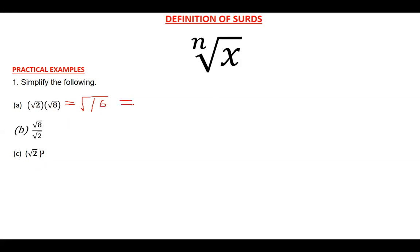I'm showing you these simple things — or reminding you of them — because they are very important for what we're going to do next, especially with indices, quadratic functions, and calculus. The square root of 16 is 4. The same applies to division: when dividing two surds with the same value of n, you divide the root of 2 into the root of 8, writing them under one root sign. So 8 divided by 2 gives 4, and the square root of 4 gives 2. These questions are just as simple as that.